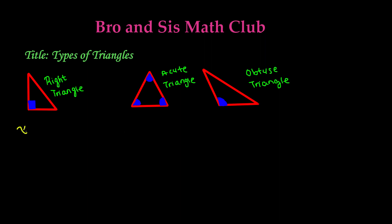So let's say our angle is x. x is equal to 90 degrees exactly — it can't be 91 degrees or 89 degrees; it has to be exactly 90 degrees. So in a right triangle, one of the angles has to be exactly 90 degrees. There's always a square symbol in a right triangle. If you see this square symbol in blue, it represents the angle, and it means it is exactly 90 degrees. This is our right triangle.